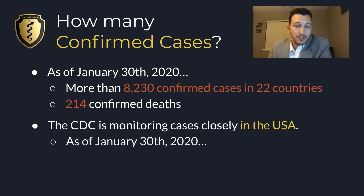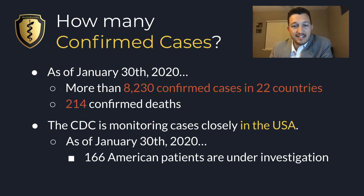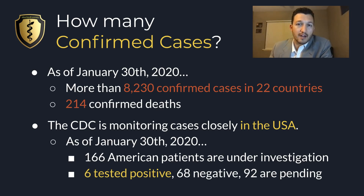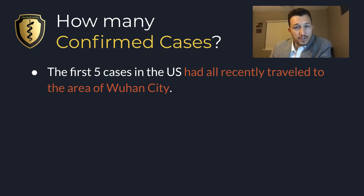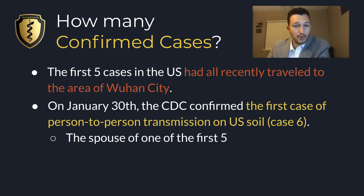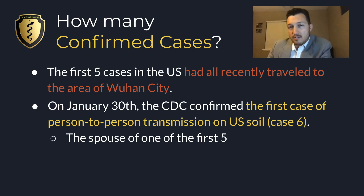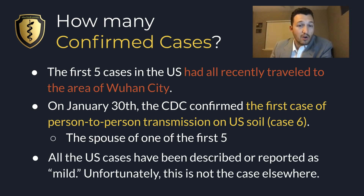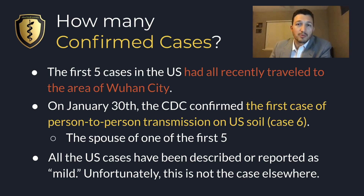As of January 30th, 2020, in the United States there are 166 American patients under investigation, with six individuals currently testing positive for the virus, 68 who have tested negative, and 92 still waiting on test results. The first five cases in the United States had all recently traveled to the area of Wuhan City. However, on January 30th, the CDC confirmed the first case of person-to-person transmission on U.S. soil — case number six — the spouse of one of the first five. All cases here in the United States have been described as mild, though people are dying from this infection in other parts of the world.